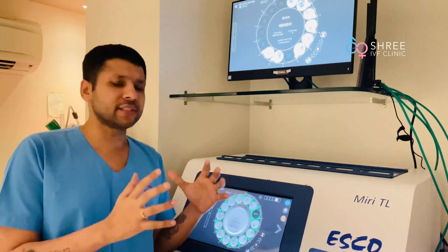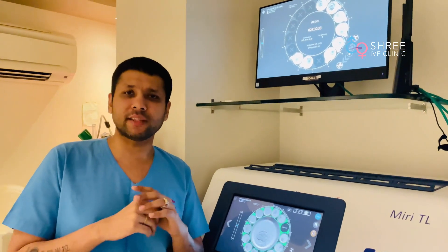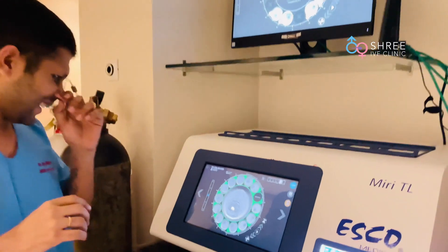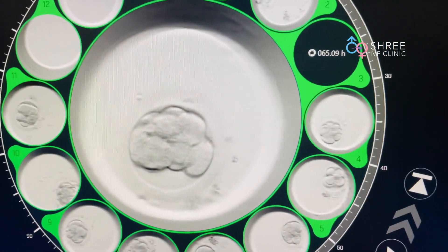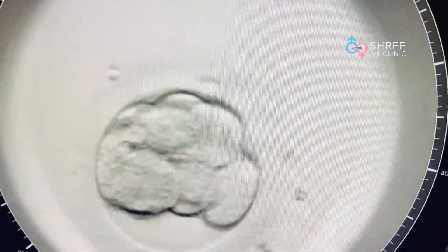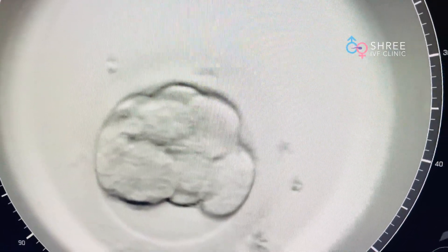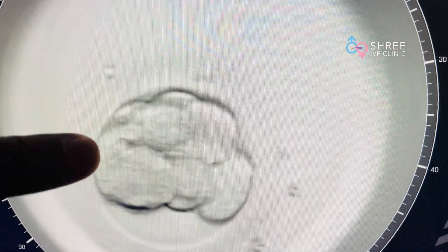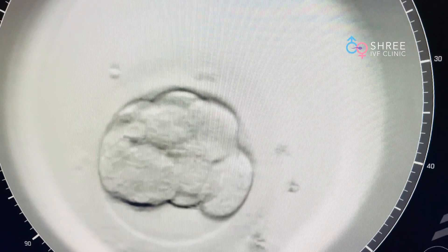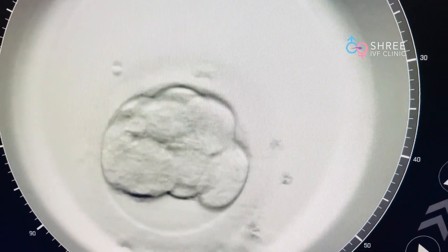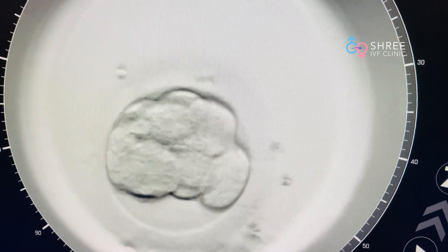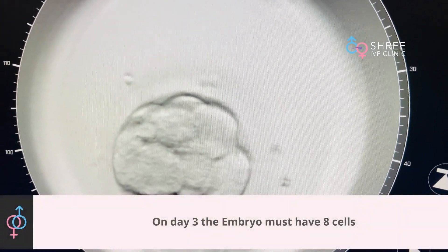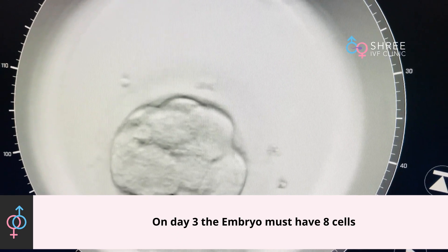We are now going to have a close-up of the screen, and this is going to be seen best when the lights are switched off. As you can now see, we are seeing the image of this embryo. In our previous images you could count the number of cells. At this stage, remember: once ICSI is done, at 24 hours it should become 2 cells, at 48 hours it should become 4 cells, and now it should become 8 cells. This is how the embryo should grow.